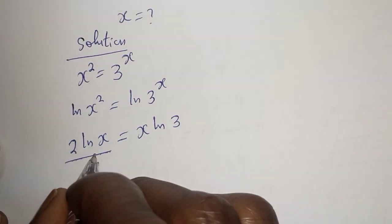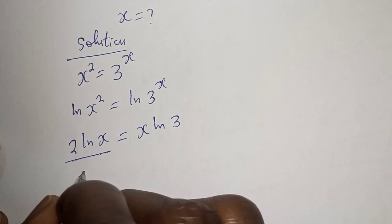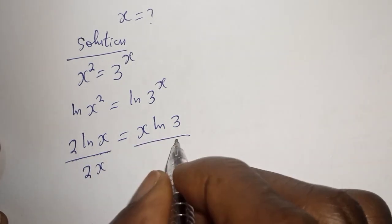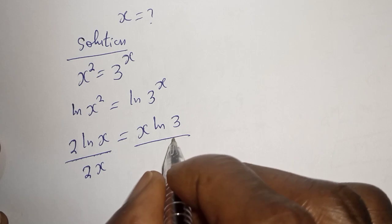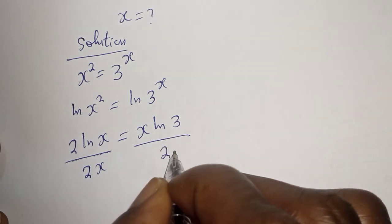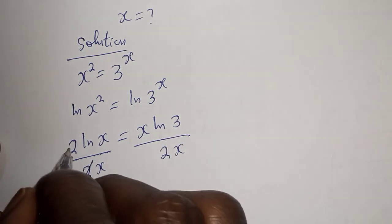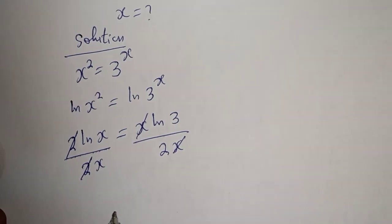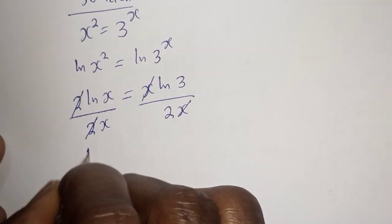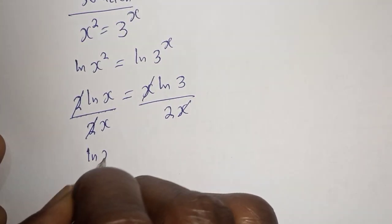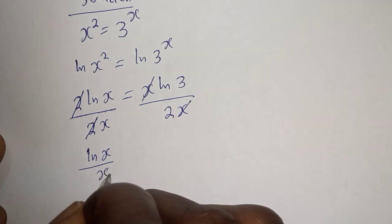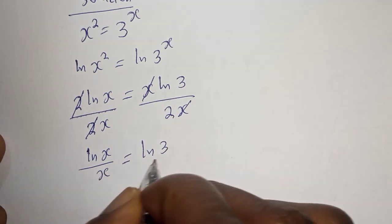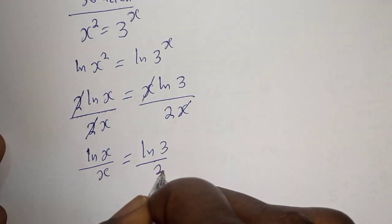Now let's divide both sides by 2s. These two cancel and the s cancels with this s. We have ln of s over s is equal to ln of 3 over 2.